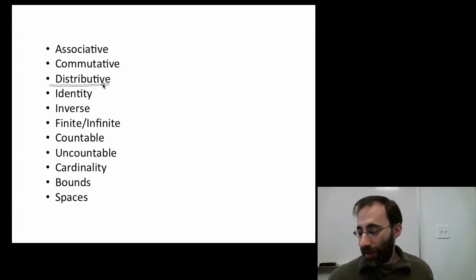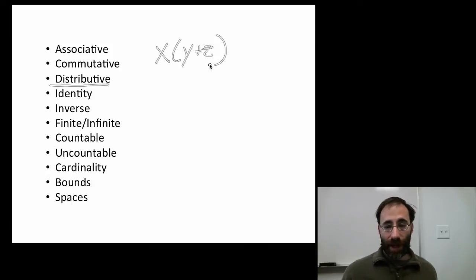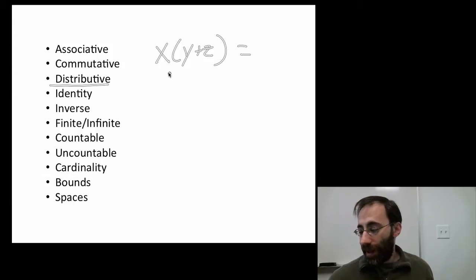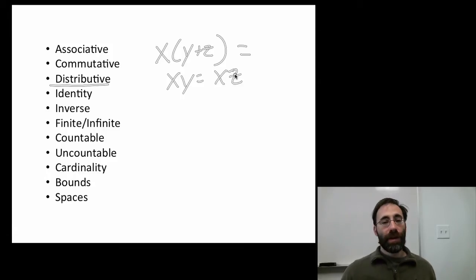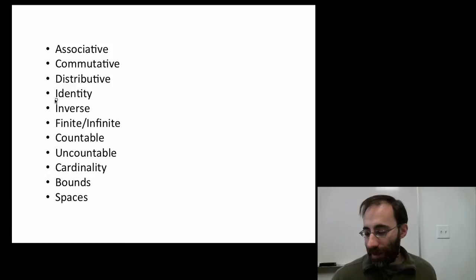Distributive property combines addition and multiplication to look like this. So, if I have x times the sum of y plus z, if the distributive property holds as it does for real numbers and integers too, then that's equal to this. I can distribute out the x across the sum. That's it.